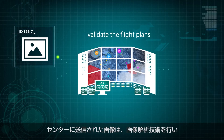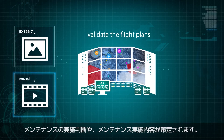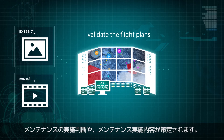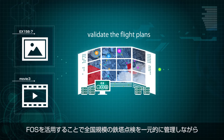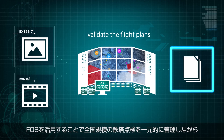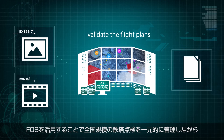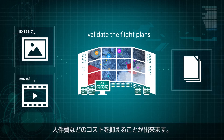The image sent to the center is used to determine the necessity of inspection by analyzing the images using an imagery analysis tool. By utilizing FOS, it is possible to reduce labor costs while centrally managing nationwide tower inspections.